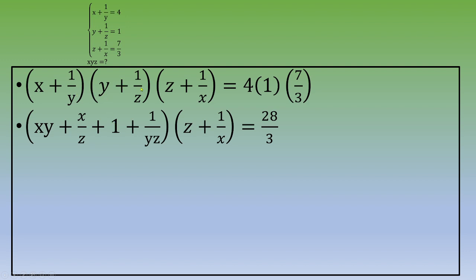1 over y times 1 over z - this is 1 over yz. Times z plus 1 over x equals 28 - 4 times 7 is 28 divided by 3.